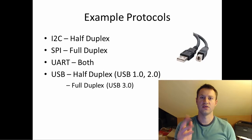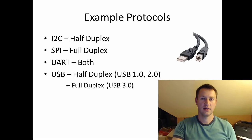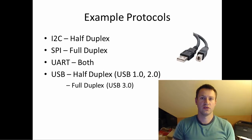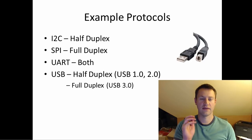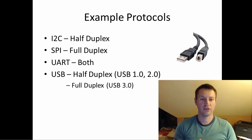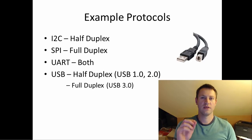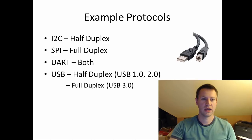SPI has similar use cases — ADCs, DACs and similar chips — but it is a full duplex communication path. The master can send data on MOSI (Master Out Slave In) and receive data on MISO (Master In Slave Out) at the same time. UART, commonly used to send ASCII data to an FPGA or microcontroller, can be either — it depends on your implementation. USB is interesting: USB 1.0 and 2.0 are half duplex, but USB 3.0 goes full duplex to achieve its faster speeds.